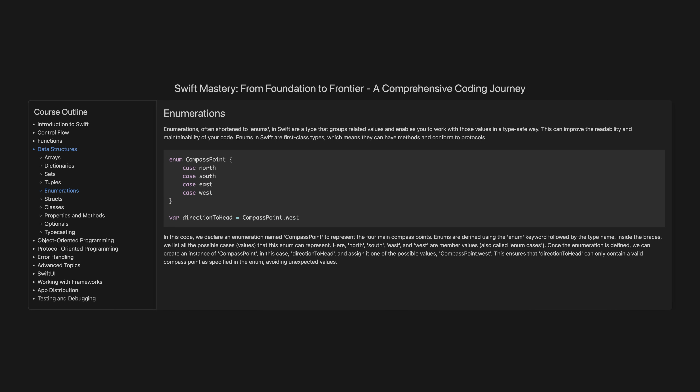In this code, we declare an enumeration named CompassPoint to represent the four main compass points. Enums are defined using the enum keyword followed by the type name. Inside the braces, we list all the possible cases — values that this enum can represent. Here, north, south, east, and west are member values, also called enum cases. Once the enumeration is defined, we can create an instance of CompassPoint, in this case directionToHead, and assign it one of the possible values, CompassPoint.west. This ensures that directionToHead can only contain a valid compass point as specified in the enum, avoiding unexpected values.